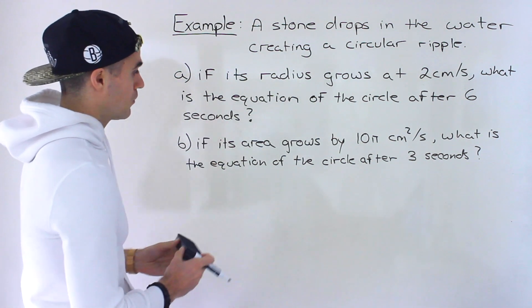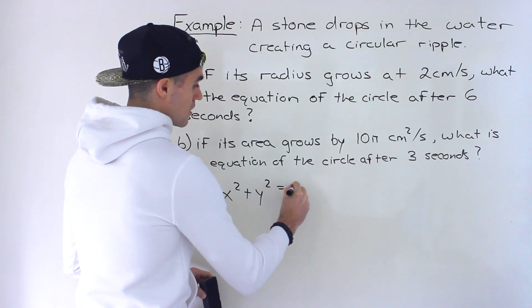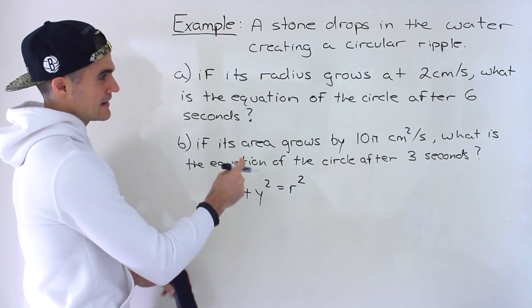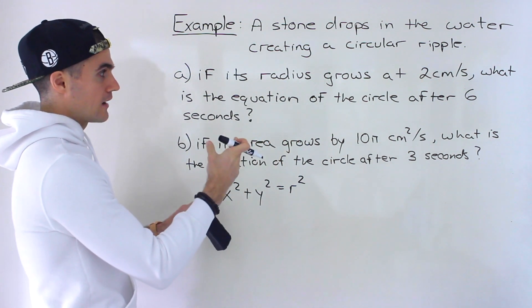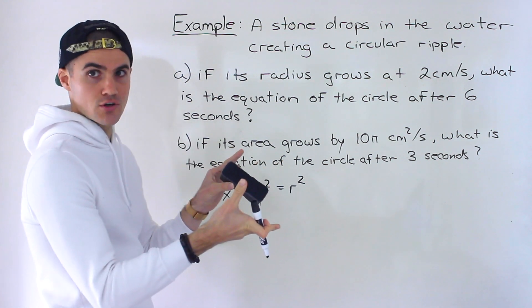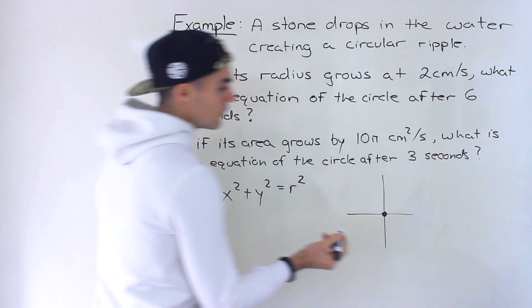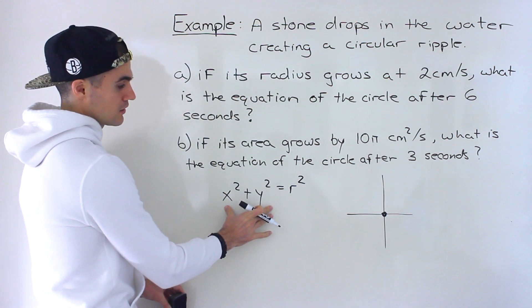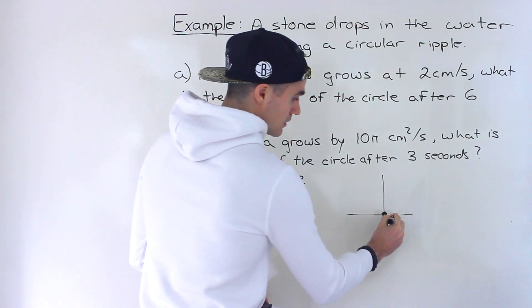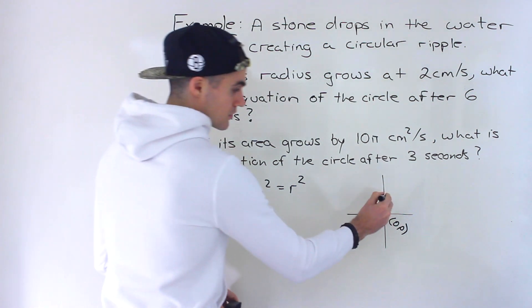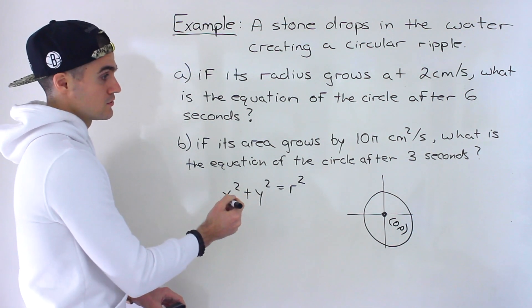For both scenarios, we need to find the equation of the circle, which will be in the format x² + y² = r². One thing to mention: this doesn't explicitly relate to the Cartesian plane — we're not told where the center of the circle is. So we can assume that if we model this on the Cartesian plane, the center is at (0, 0), which gives us the x² + y² = r² format.